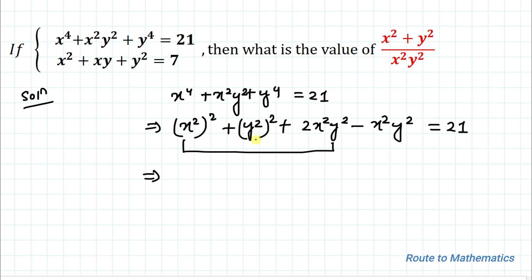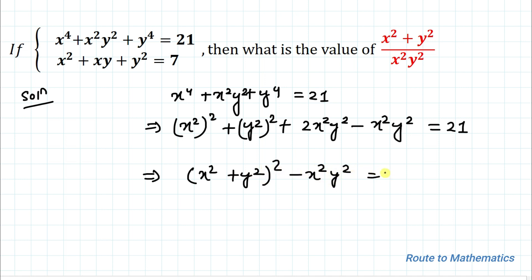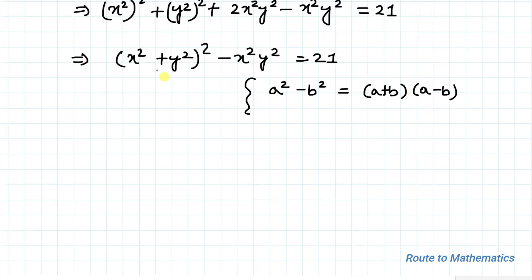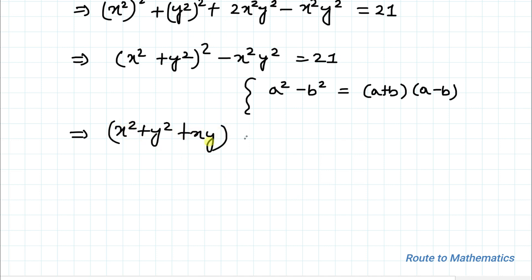Here we can apply the algebraic identity of (a + b)². By applying the identity we have (x² + y²)² minus x²y² = 21. We also know the identity a² - b² = (a + b)(a - b). Letting a = (x² + y²) and b = xy, we can write (x² + y² + xy)(x² + y² - xy) = 21.